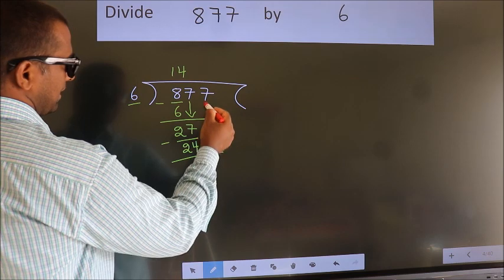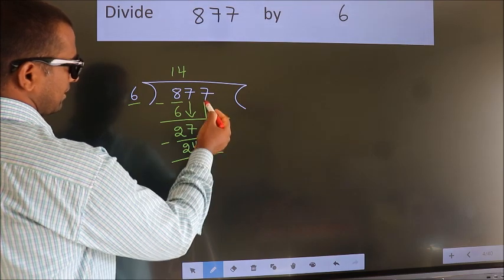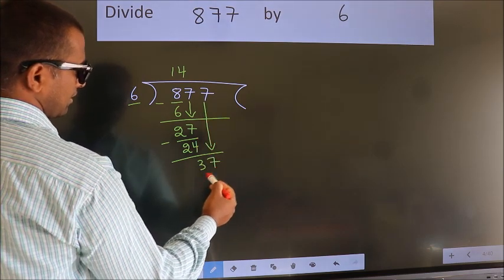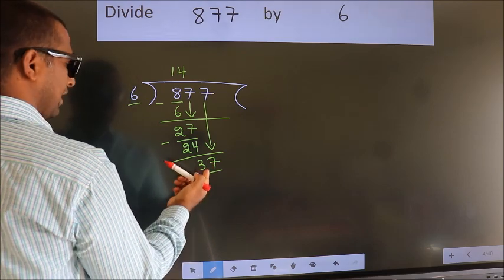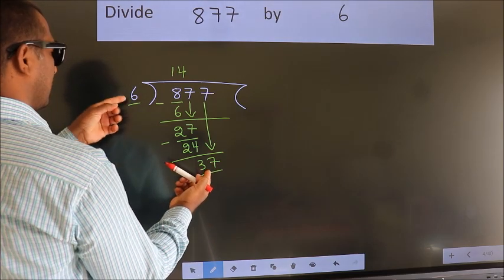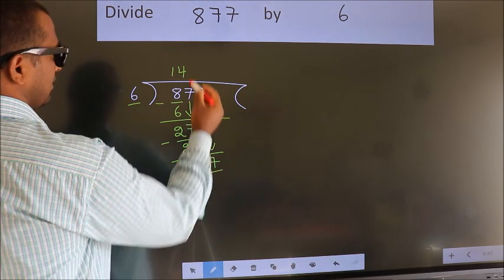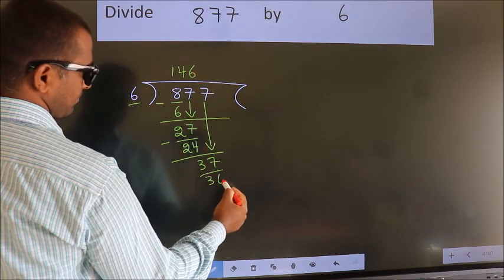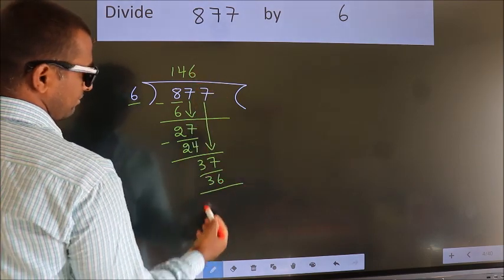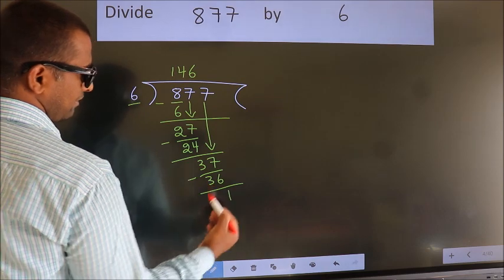After this, bring down the beside number. So 7 down, giving us 37. A number close to 37 in the 6 table is 6 sixes 36. Now we subtract that. We get 1.